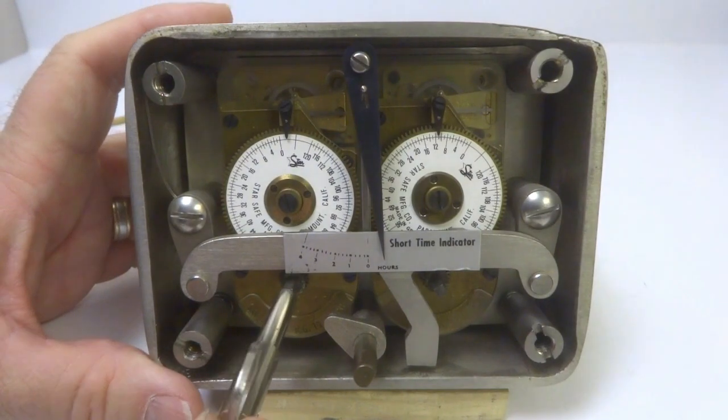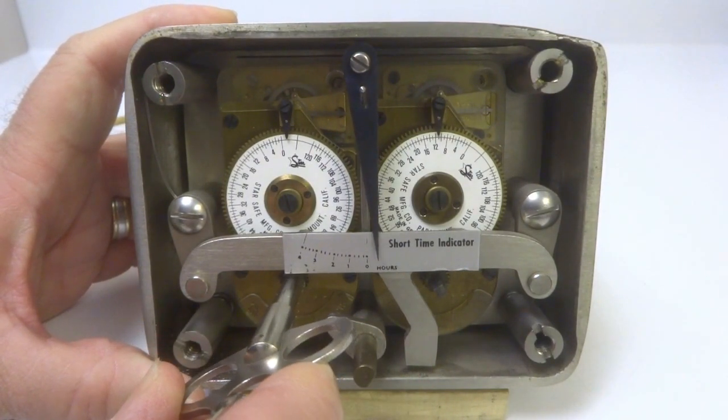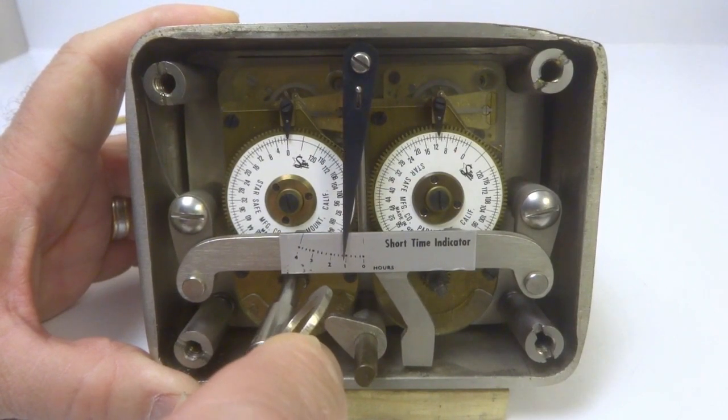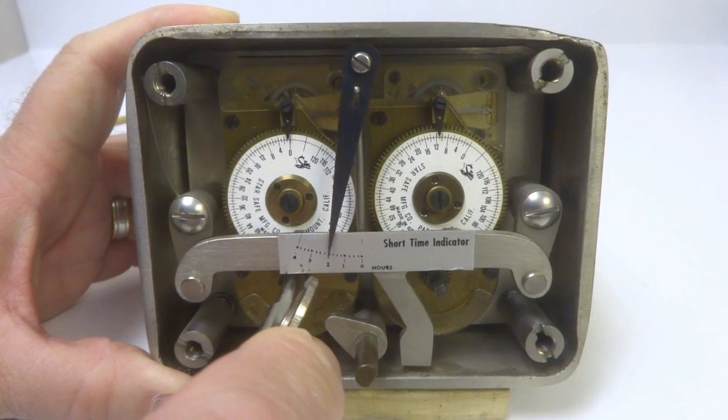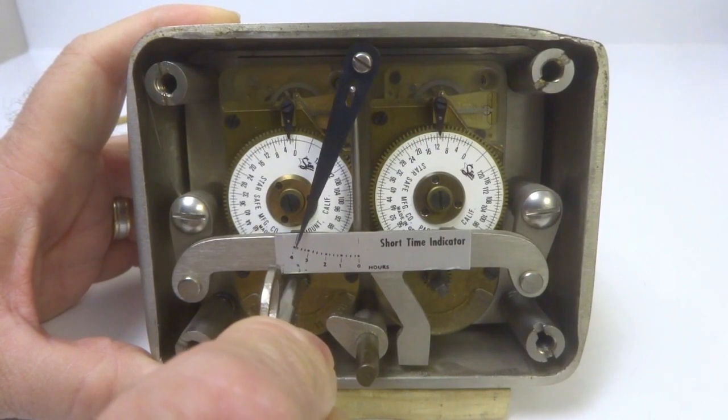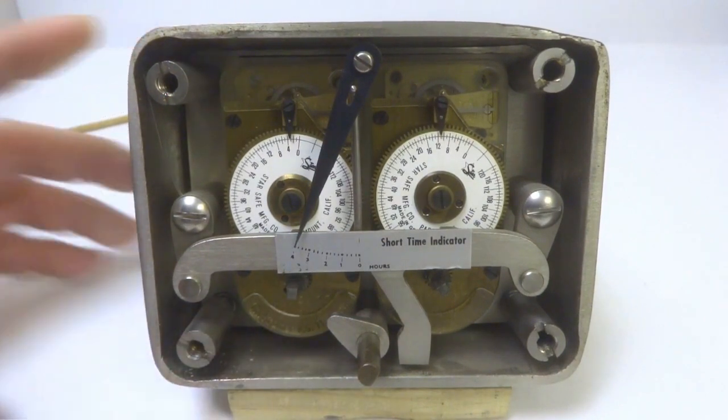But once one starts to wind the second movement, you can now see the indicator dial moving. And now it is up to four and you can see that it is indeed at four at this point.